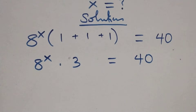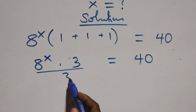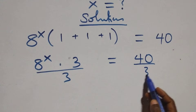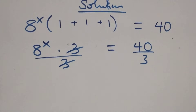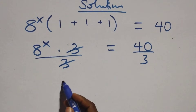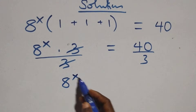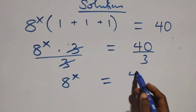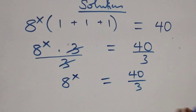The next step: divide both sides by 3. The threes cancel each other, and we have 8 raised to the power x equals 40 over 3.